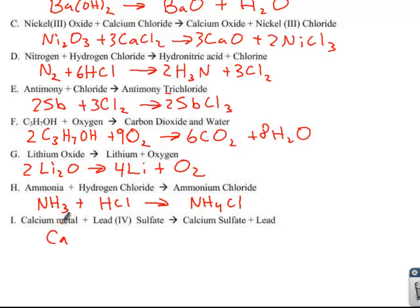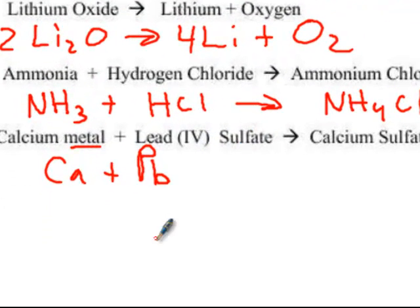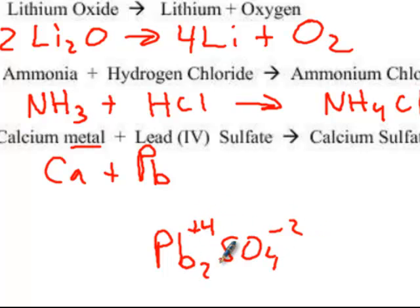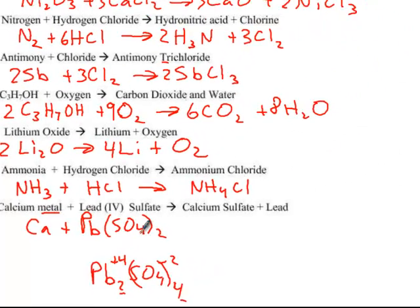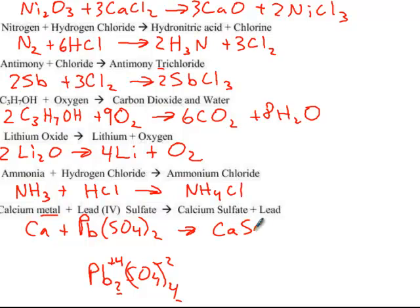Calcium metal. Remember, don't get confused by things like metal or gas. It's just telling you the state of matter. So Ca plus lead is lead 4 sulfate. I'm going to write that one down here because I'm going to have to fix that. Lead 4 sulfate. See, I would have a 2 and a 4, which is going to be reduced to that. So plus 4, minus 2. We get a 2 and a 4, so we reduce it, and we end up with that formula. Calcium sulfate and lead. So it looks like a 2 there balances the sulfates, a 2 there balances the calciums. So there it is.